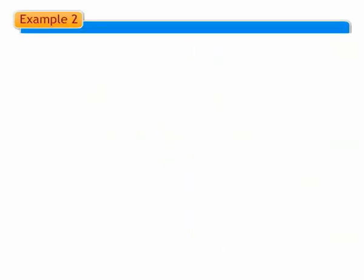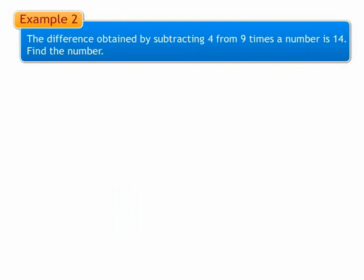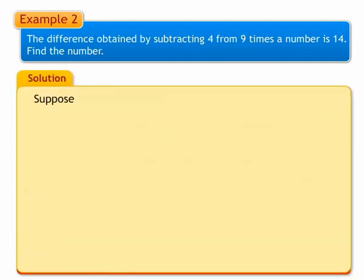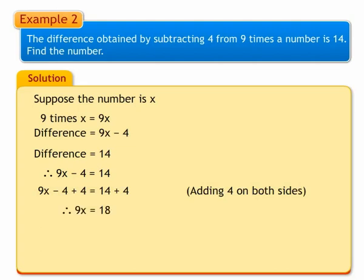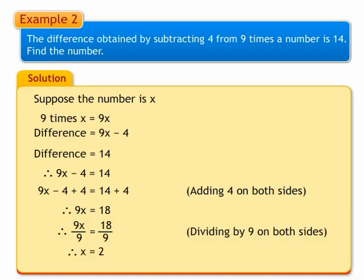Example 2: The difference obtained by subtracting 4 from 9 times a number is 14. Find the number. Let us suppose the number is x. 9 times the number is equal to 9x. Difference between 9 times x and 4 is 9x minus 4. According to the condition in the problem, the difference is equal to 14. Therefore, 9x minus 4 is equal to 14. By addition property, we add 4 on both sides of the equation. We get 9x is equal to 18. By dividing both sides by 9, we get x is equal to 2. The number is 2.